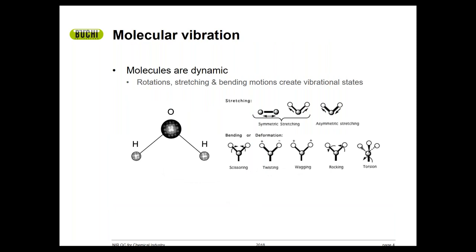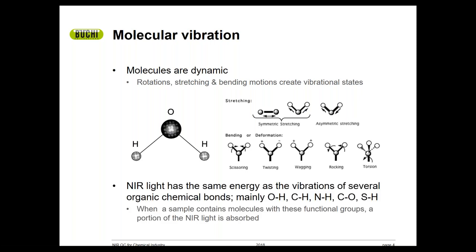As this slide indicates, molecules are actually very dynamic. They undergo various bending, stretching, and other movements. Kind of sounds like a yoga class. The frequency of NIR light matches many of the molecular vibrations we are interested in when it comes to basic chemistry. Those include OH, CH, NH, and CO bonds. The absorption of NIR light by these functional groups enables us to get a spectral signature or spectrum that we can use to do qualitative or quantitative analysis.